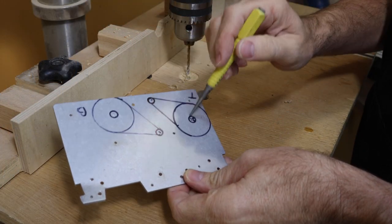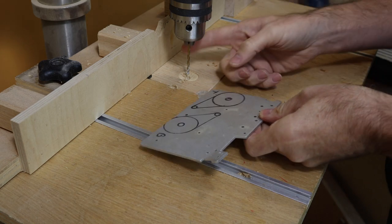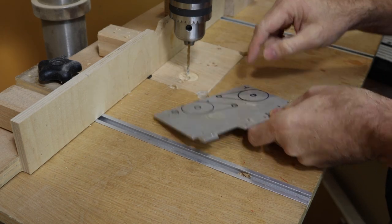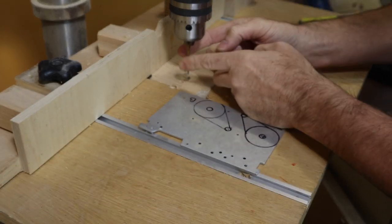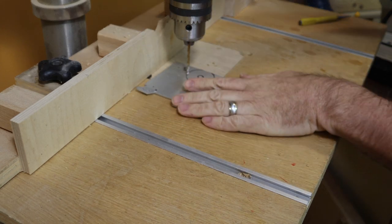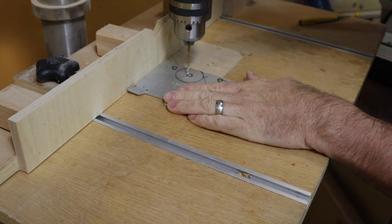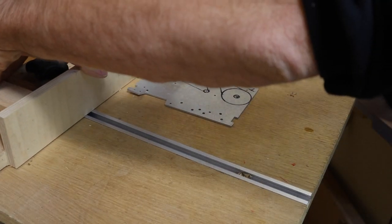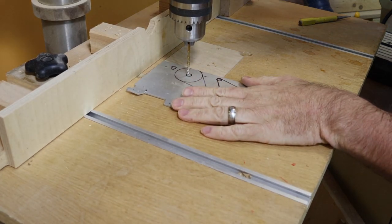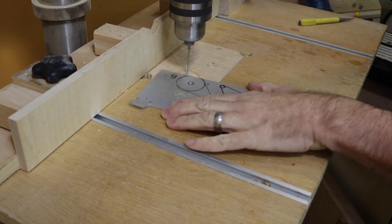I used a nail set to mark the centers of this and I'm going to drill out the center holes now. I'm using a 9/64th bit. John used a 1/8th piece but it just has to match whatever the diameter of the screw that you're using for the center.